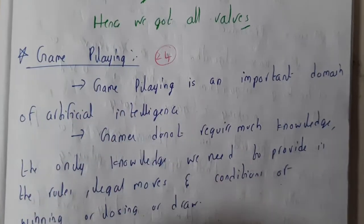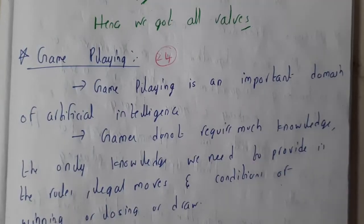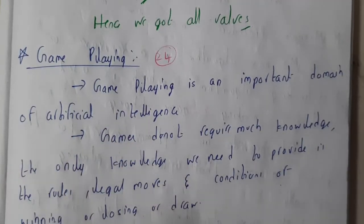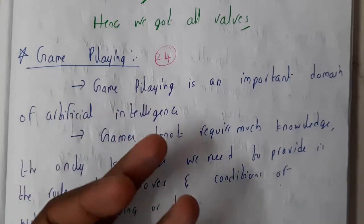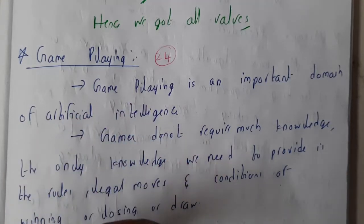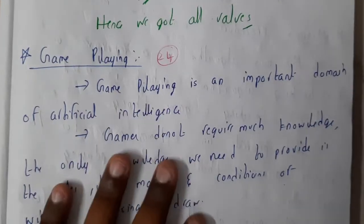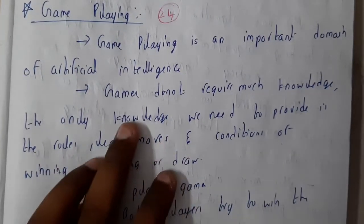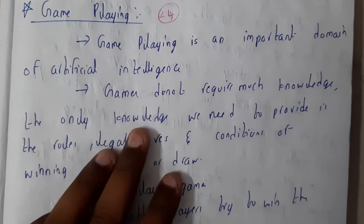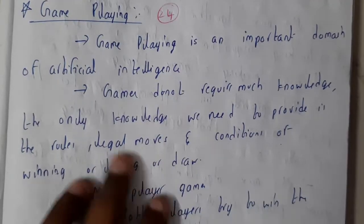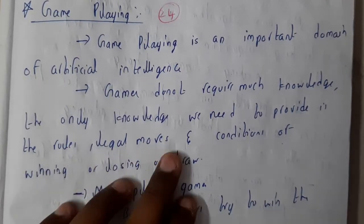Chess, Ludo with computer - in that way, game playing is an important domain of artificial intelligence. Games do not require much knowledge. The only knowledge we need to provide is the rules, legal moves, and conditions of winning and losing.